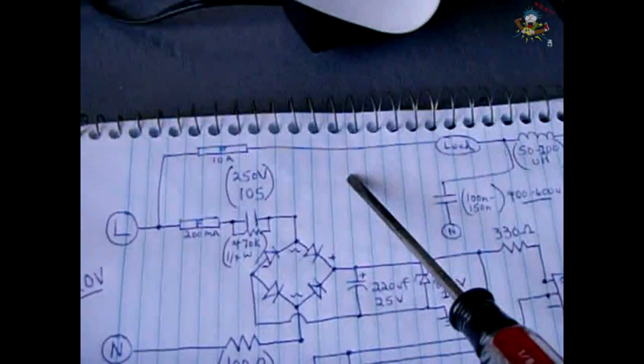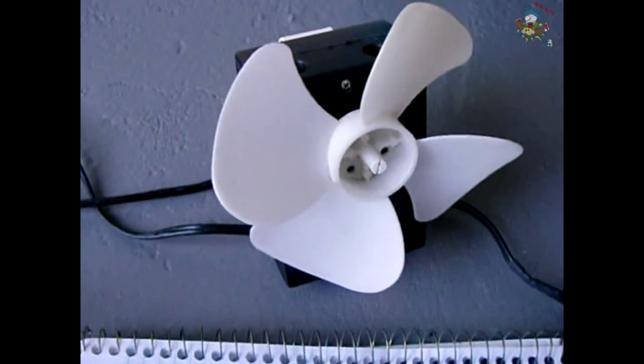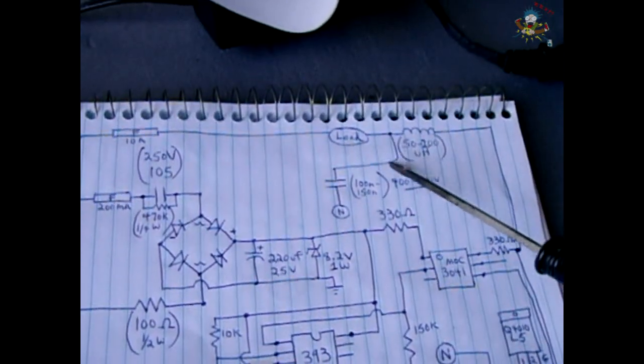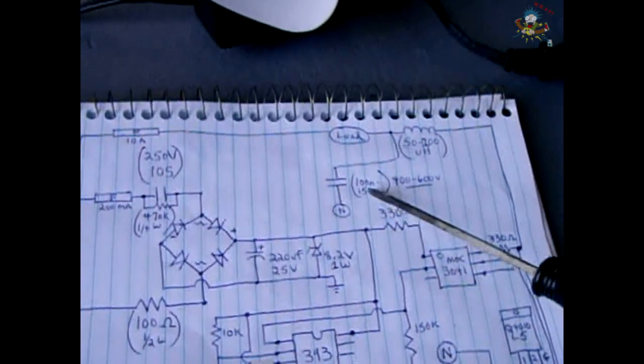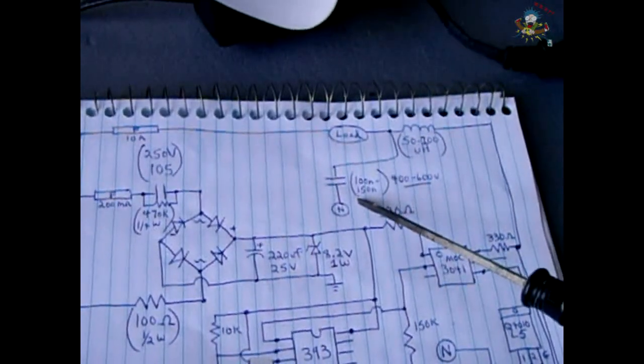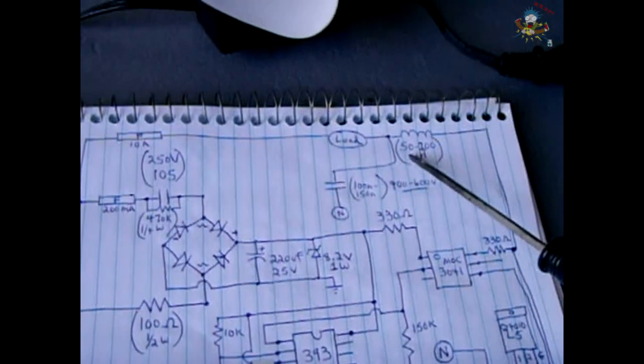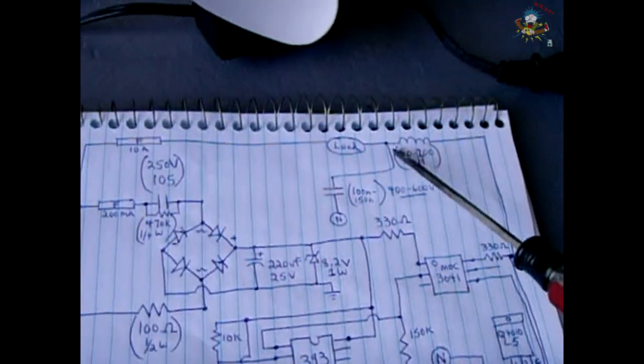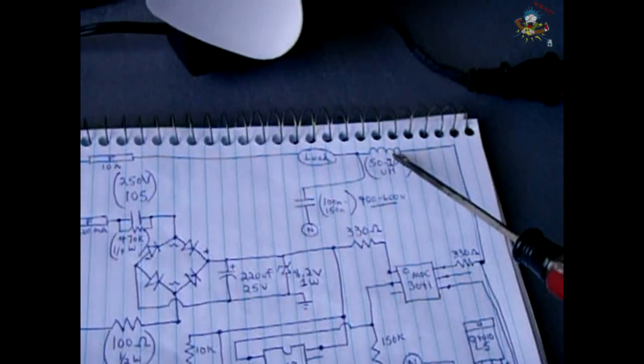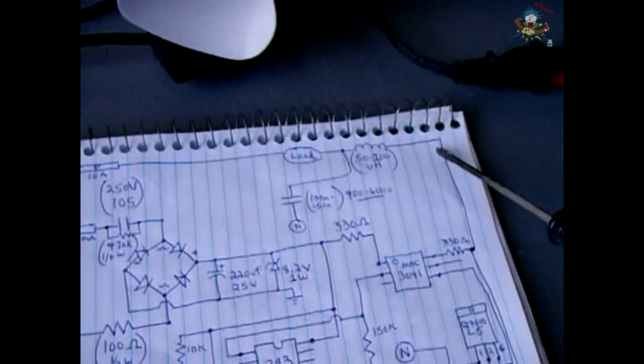From that fuse it will flow into the load, which in this case will be this microwave oven fan on high power. This part of the circuit which follows the load has a capacitor which is a 100n or a 0.1 microfarad to a 0.15 microfarad 400 to 600 volt capacitor, and this 50 to 200 micro henry inductor.